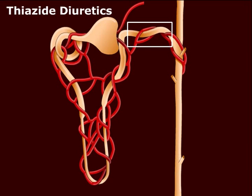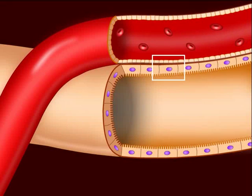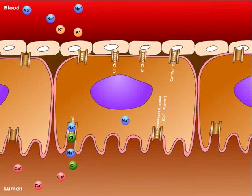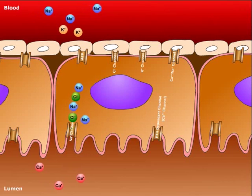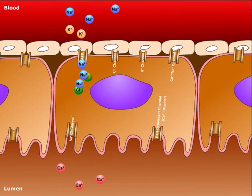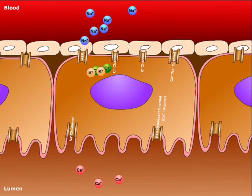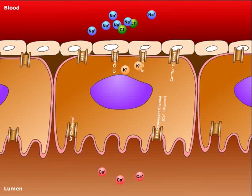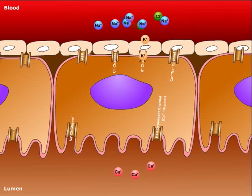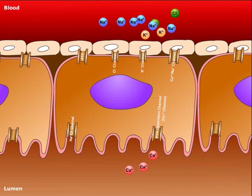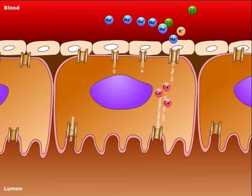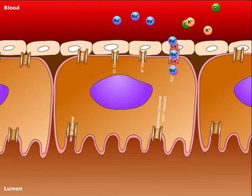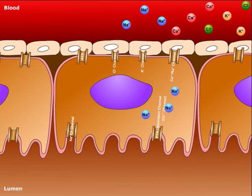Let's take a closer look at the distal tubule. Sodium and chloride are reabsorbed through a sodium-chloride symport. The sodium is pumped across the basal membrane via the sodium-potassium ATPase in exchange for potassium. Chloride is reabsorbed into circulation due to its electrochemical gradient. Once the exchanged potassium is inside the cell, it also diffuses back into circulation. Calcium enters the cell through a parathyroid hormone-dependent channel. Once inside the cell, calcium is exchanged by a sodium-calcium antiporter in the basolateral membrane.